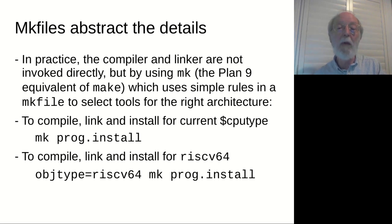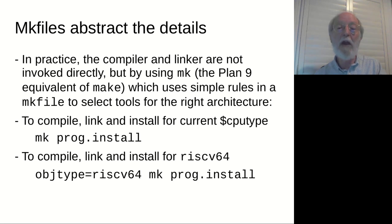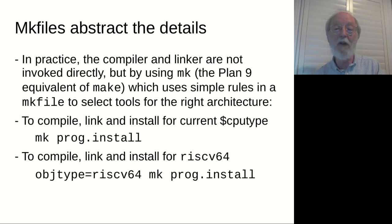It's a bit verbose remembering to do the compiles and links by hand, so generally we use a make file. The Plan 9 equivalent of make is called mk — like everything in Plan 9, it's small and simple. There are make include files that set up all the architecture dependencies to call the right compiler and linker. To compile a program and install it in your bin directory, you just say mk prog.install. To cross-compile for RISC-V 64-bit, you prefix with objtype=riscv64.